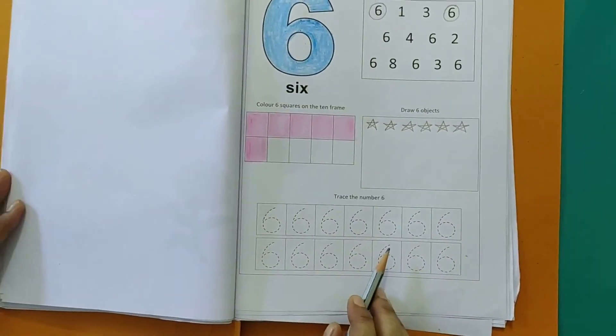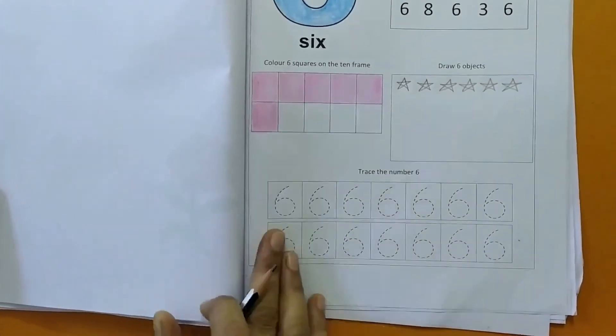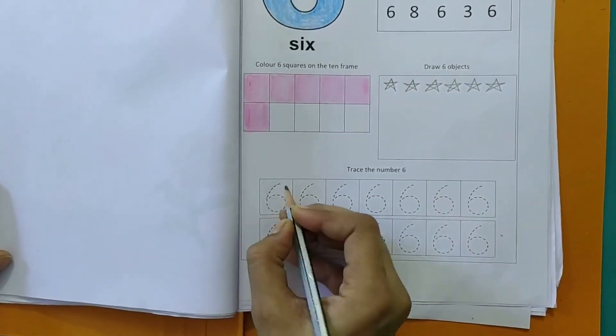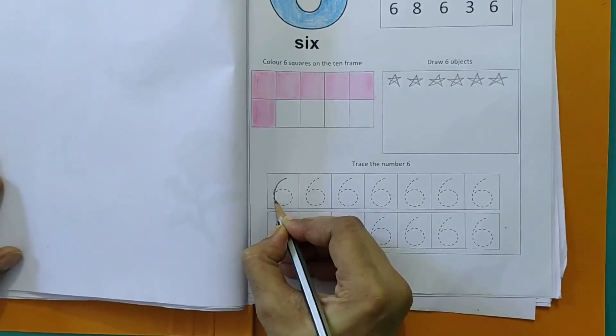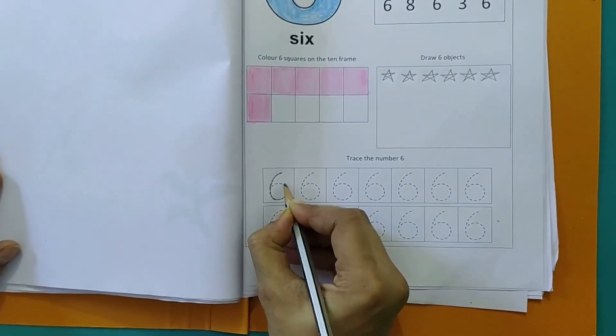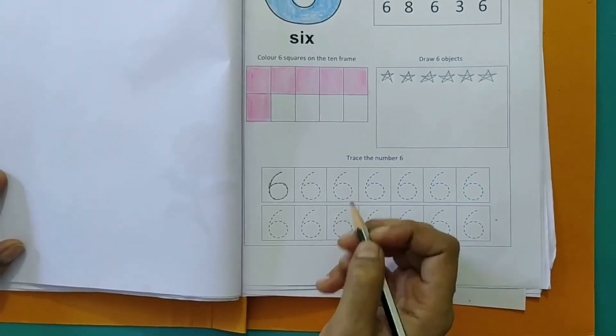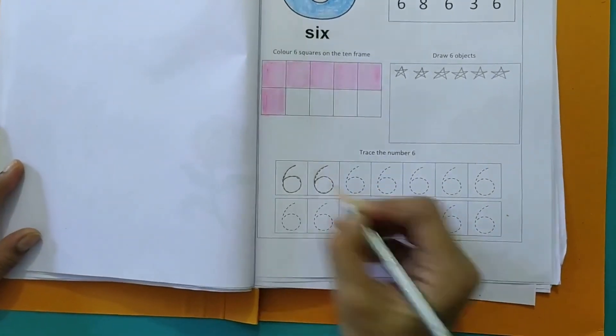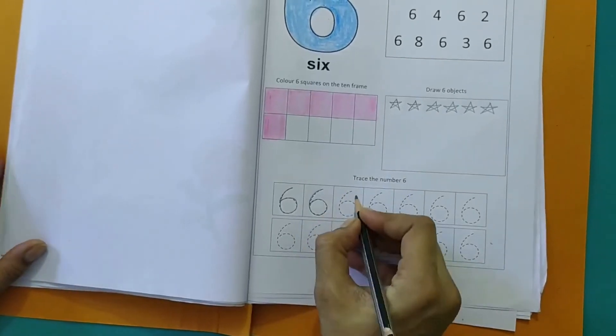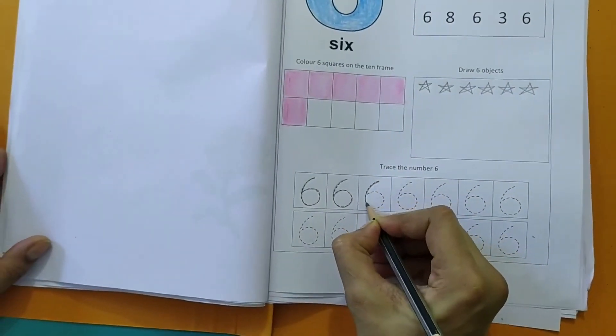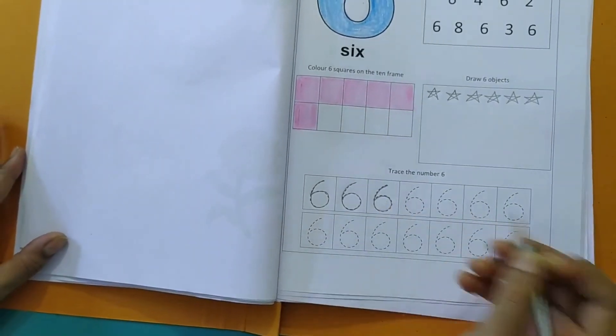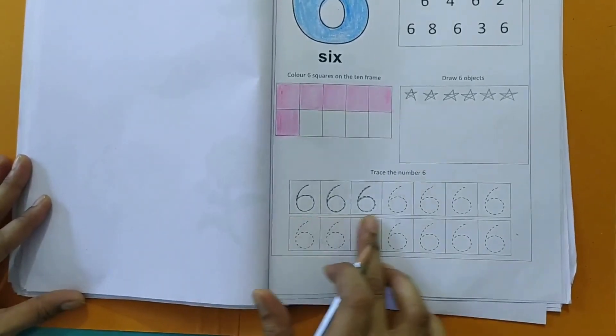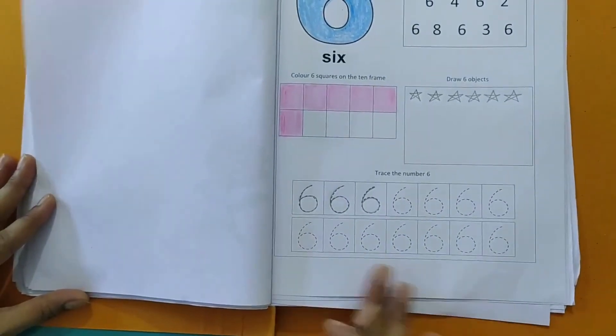So our next activity is we have to trace the number 6. So we will start from this dotted line here. Make a curve and make a loop. This is how we make a 6. Once more. Make a curve and make a loop. This is how we make a 6. So in the same way you have to trace the number 6 and complete the worksheet.